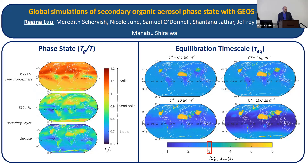Regina Lu from UC Irvine presents global simulations of SOA phase state with GEOS-Chem. At the surface level, SOA phase states generally correspond to relative humidity patterns, but at higher altitudes SOA is more likely to be found in the semi-solid to solid phase. Equilibration timescales were calculated with the process-level multi-layer model KM-GAP. For SOA in the western United States, northern Africa, and western China, SOA does not equilibrate within the 20-minute chemical time step of GEOS-Chem.